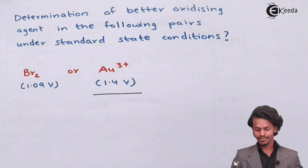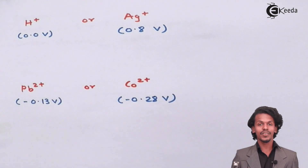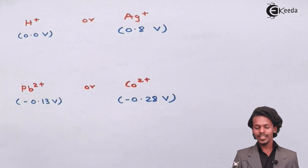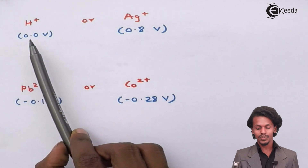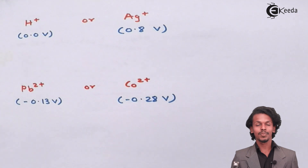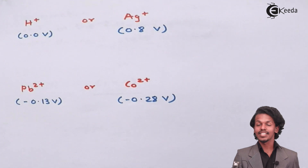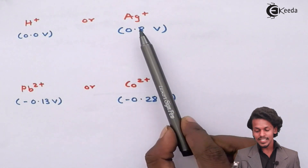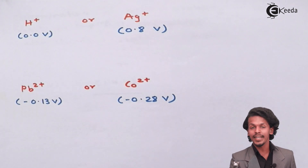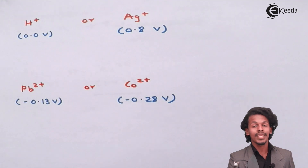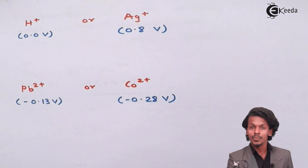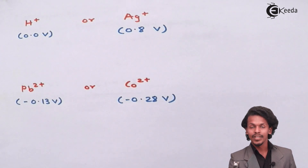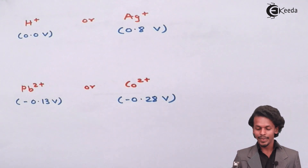For the next question, we compare H⁺ and Ag⁺ as oxidizing agents. The reduction potential of H⁺ is 0.0V and that of Ag⁺ is 0.8V. Since Ag⁺ has the higher positive reduction potential, it has a greater capability to gain electrons and show reduction. Therefore, Ag⁺ is the stronger oxidizing agent compared to H⁺.